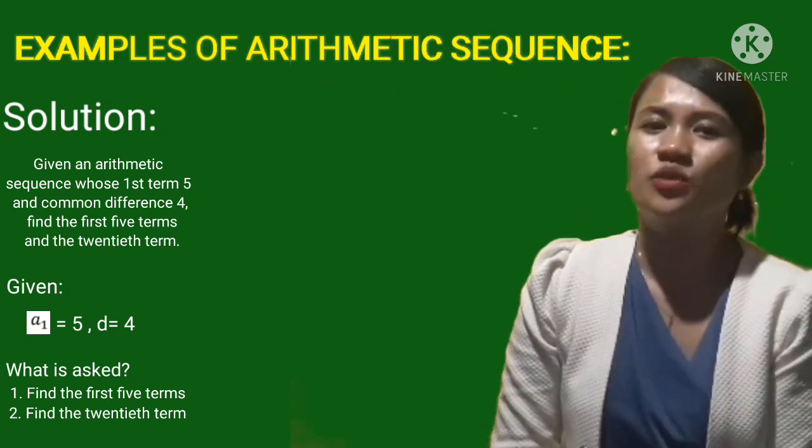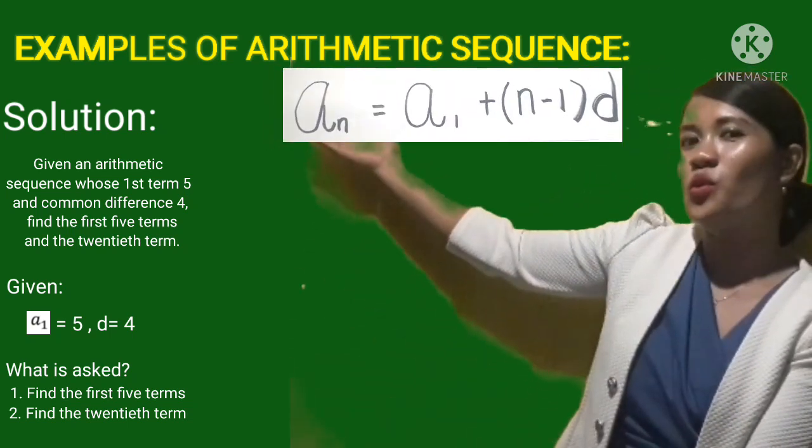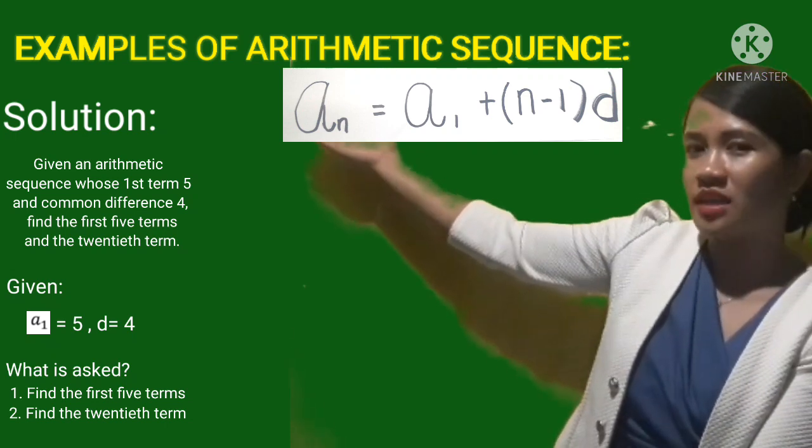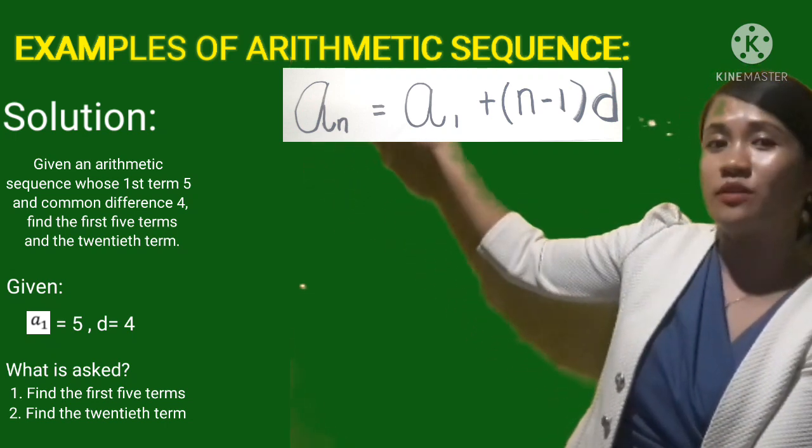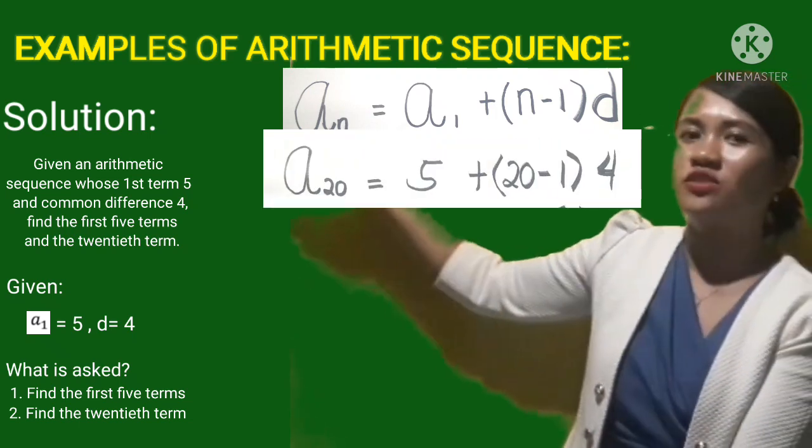So next is the 20th term. So how to solve that one? Using the general rule of the arithmetic progression or sequence. That is A sub n is equal to A sub 1 plus n minus 1 times d. So substitute the value.